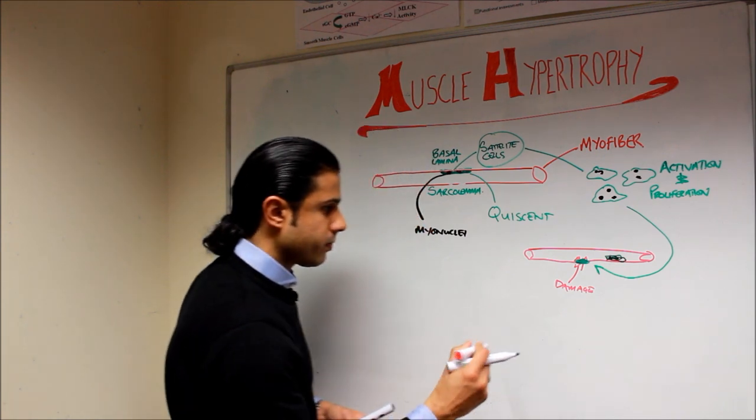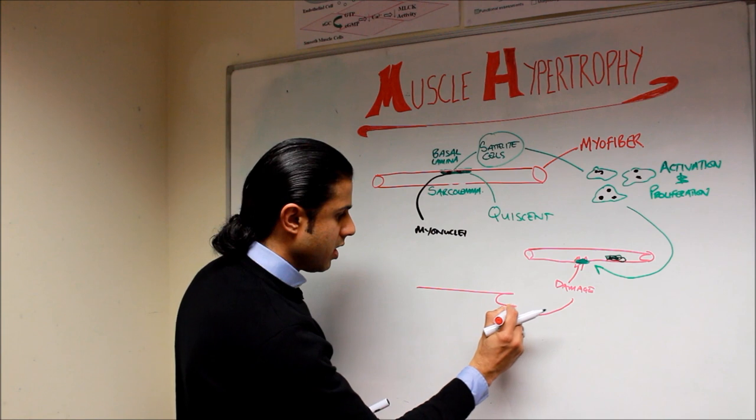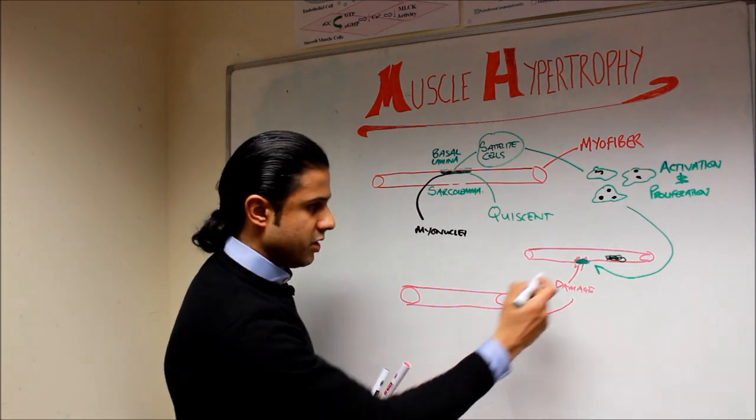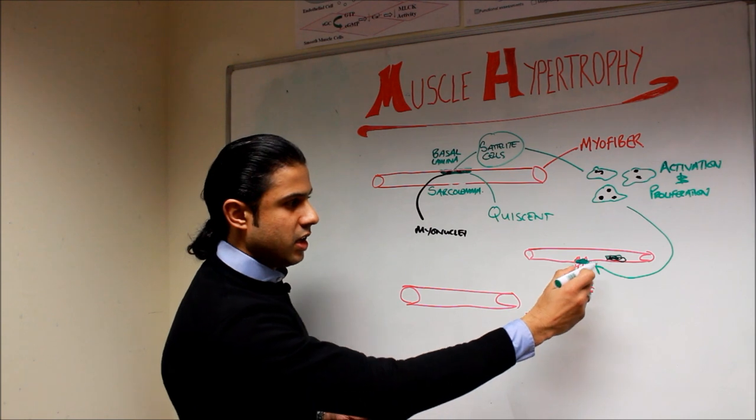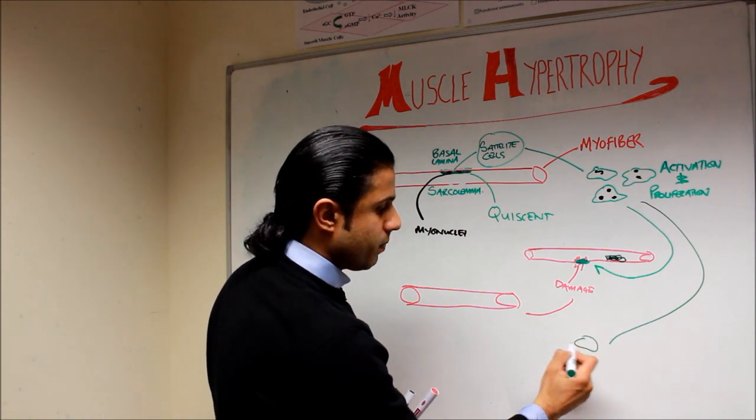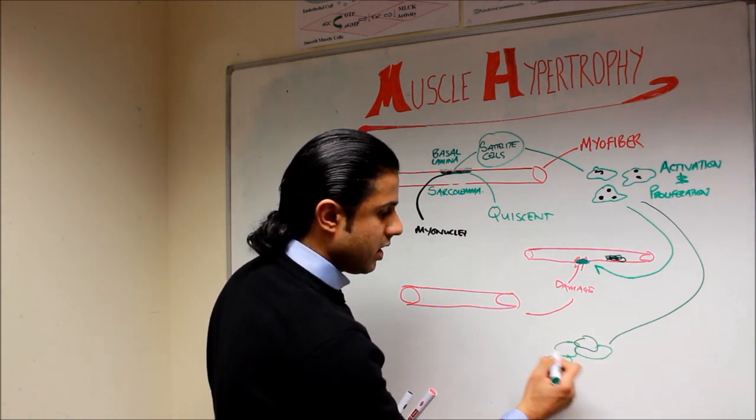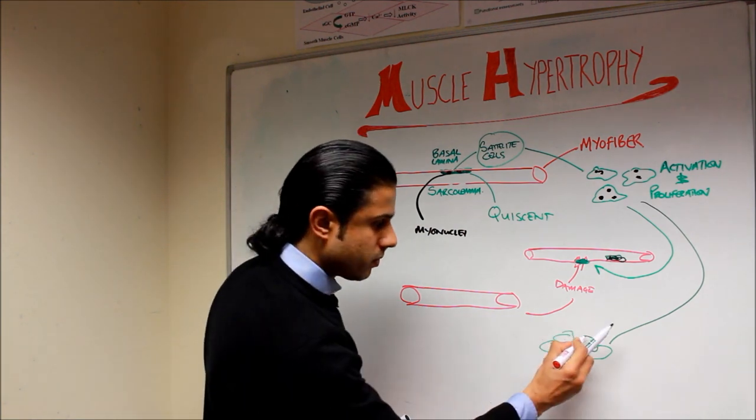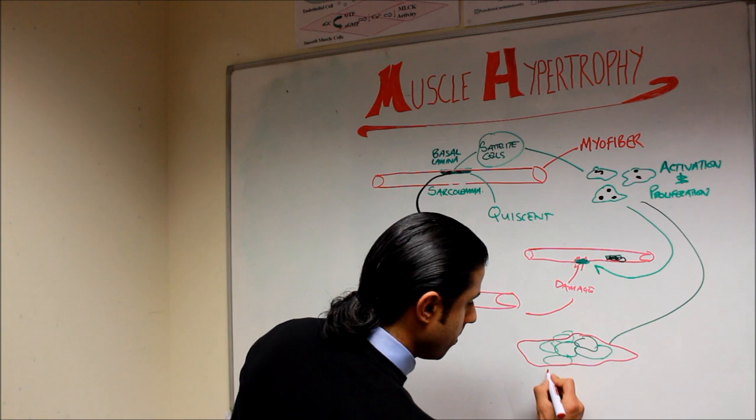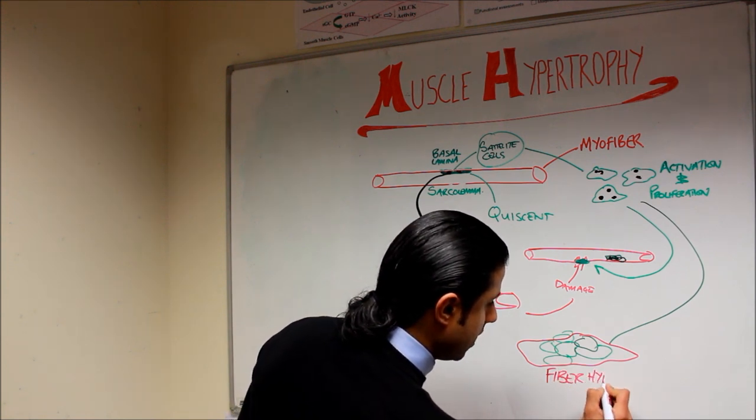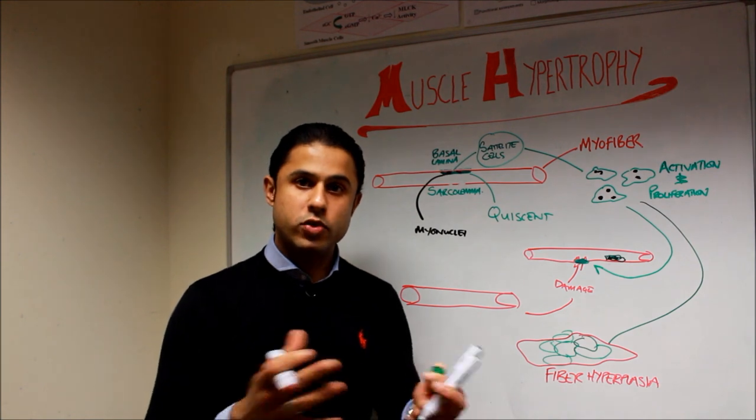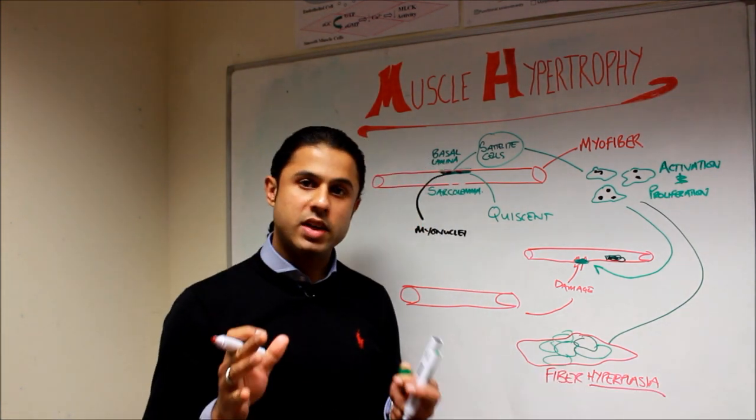If we move along here we'll then have a myofiber which is now all of a sudden larger, the damage has been repaired. There is some evidence that when you have the activation of satellite cells these satellite cells can actually fuse together and form a new muscle fiber. This is called fiber hyperplasia. Hyperplasia basically means an increase in number, hypertrophy means an increase in size. Scientifically there's not as much evidence for satellite cells coming together and forming new myofibers. There is much more evidence for the chemotaxis